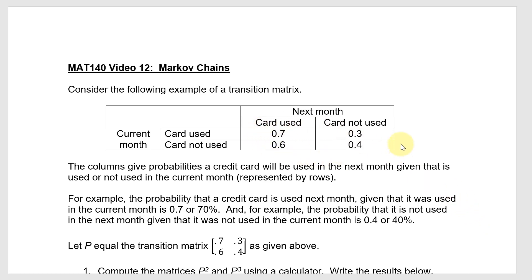That's the matrix given here. The columns give probabilities a credit card will be used in the next month, given that it is used or not used in the current month, represented by the rows. For example, the probability that a credit card is used next month, given that it was used in the current month, is 0.7, or 70%. That's coming from this entry here.